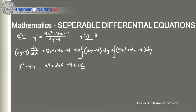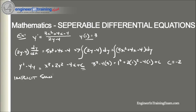Now let's use our initial value to determine the constant of integration. We plug in y(1) = 3: 3² − 4(3) = 1³ + 2(1)² − 4(1) + C, and we find that C = −2. So our implicit solution is y² − 4y = x³ + 2x² − 4x − 2.